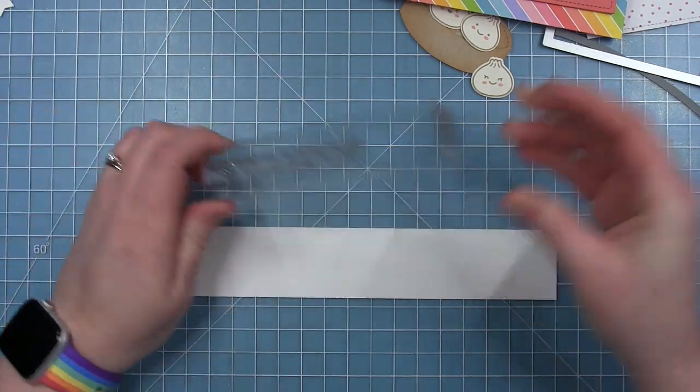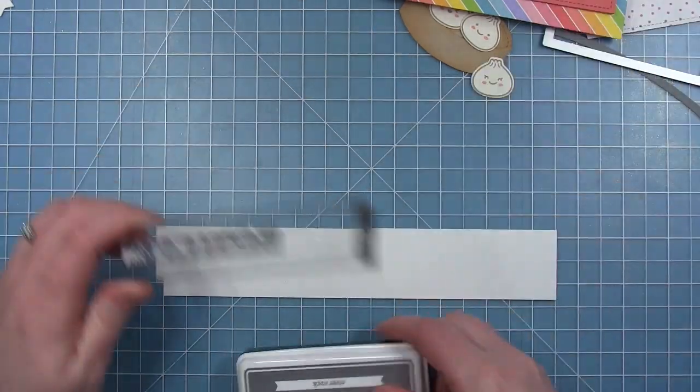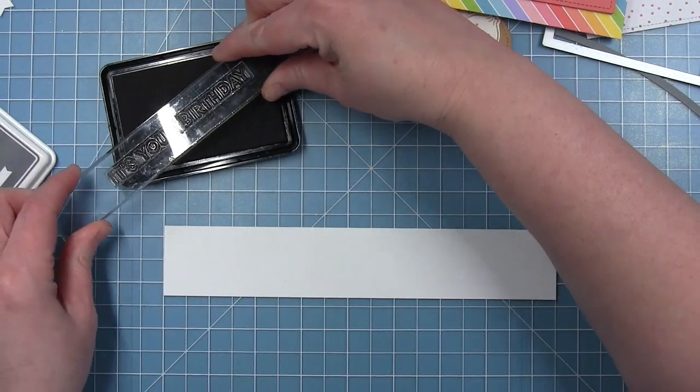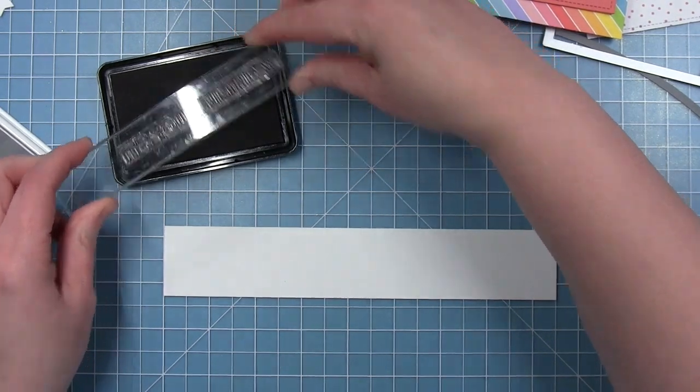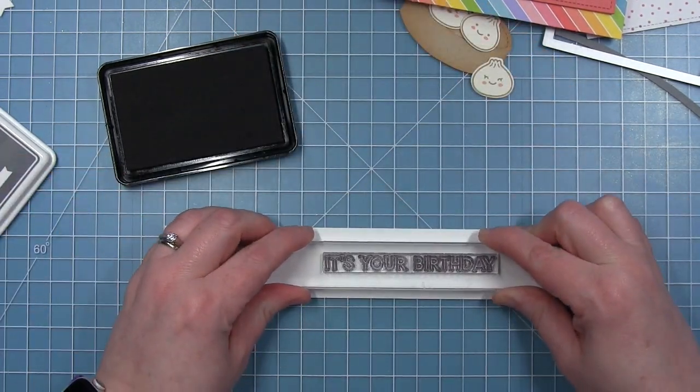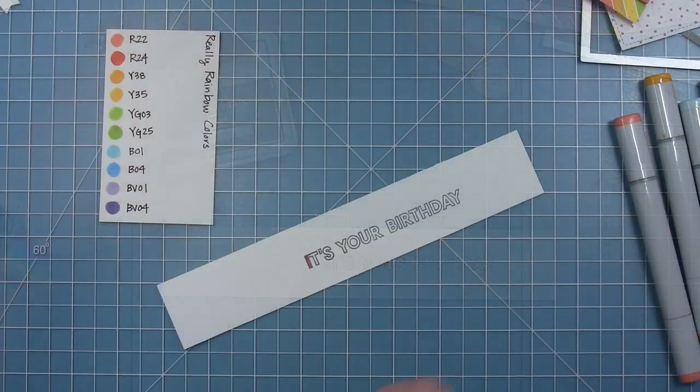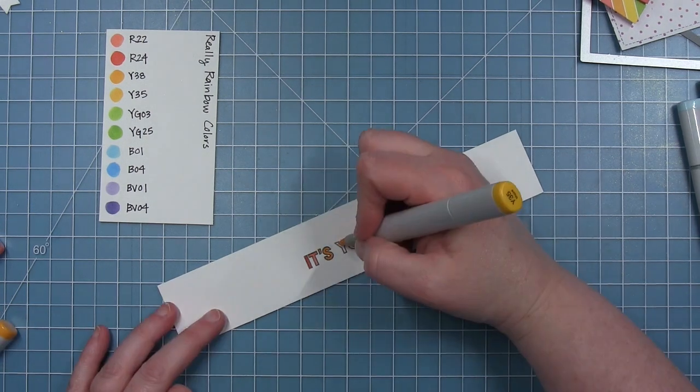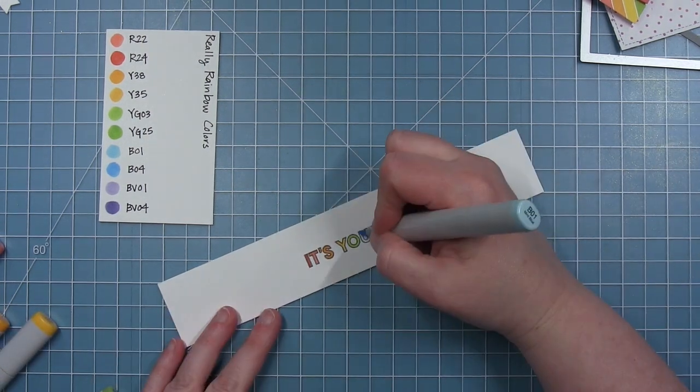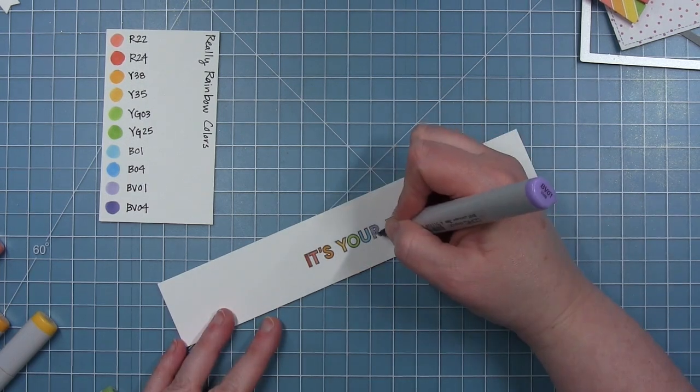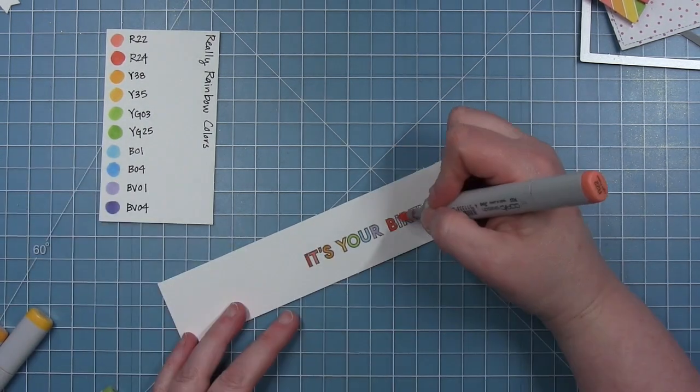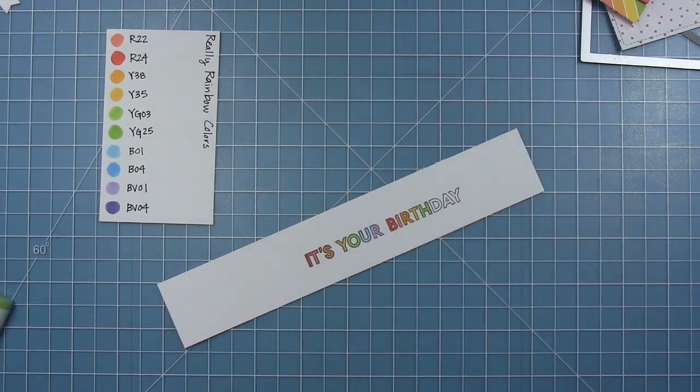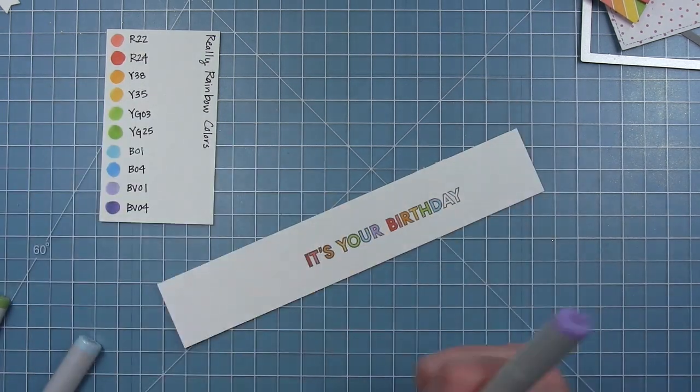For this sentiment, I'm not using the sentiment in this stamp set. I'm using one of the new offset sayings everyday sentiments that says 'it's your birthday,' stamping it in River Rock ink, a gray Copic friendly ink, on white paper. You can see my little cheat sheet card with the Copics that I feel match the really rainbow papers. I just pulled out a rainbow of colors that match my striped paper that's going in my background, and I'm coloring in my letters in those rainbow colors.